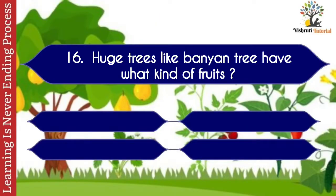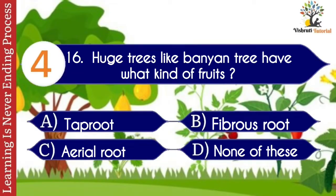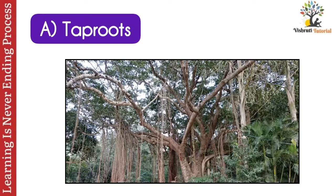Question number sixteen: huge trees like banyan tree have what kind of roots? Options: A. Tap root, B. Fibrous root, C. Aerial roots, D. None of these. The correct answer is A. Tap roots. Huge trees like banyan tree have tap roots.